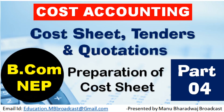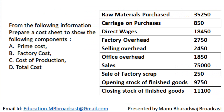Hello everyone, welcome to my YouTube channel. In today's video, let us see how to prepare a cost sheet. The question is on the screen — kindly take a screenshot. From the following information, prepare a cost sheet to show: prime cost, factory cost, cost of production, and total cost. They have given raw materials purchased, carriage on purchases, direct wages, factory overhead, selling overhead, office overhead, sales, sale of factory scrap, opening stock of finished goods, and closing stock of finished goods.